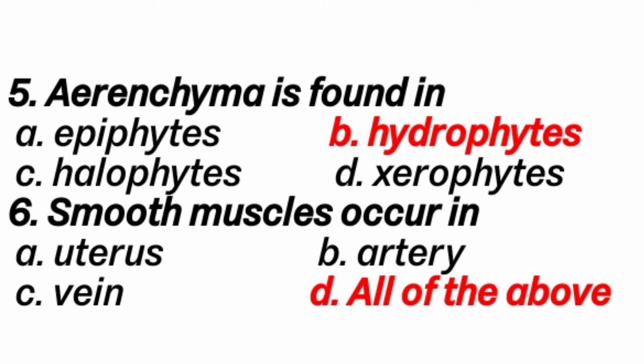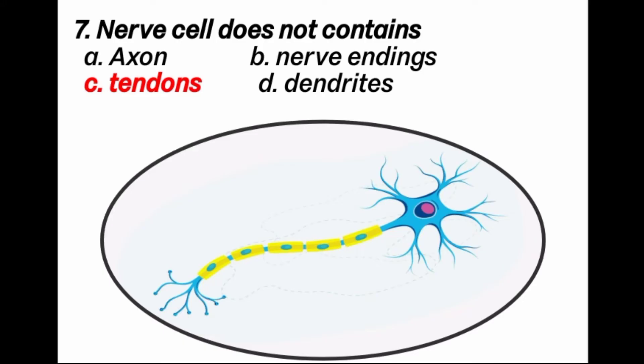So the answer is D option: All of the above. Question 7: Nerve cell does not contain? Answer is C option: Tendons. Because axon, nerve endings, and dendrites are found in nerve cells, but tendons are connective tissues.